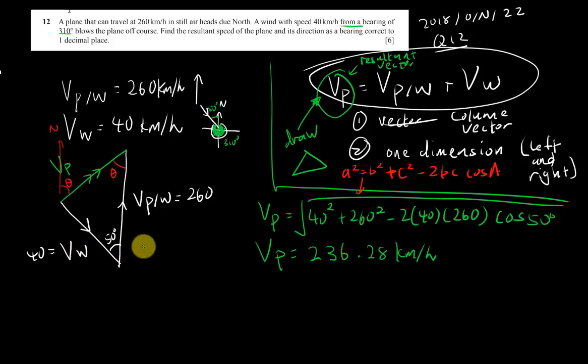In order to find this angle, I can just use the sine rule if I'm not mistaken. So I will say sine theta over opposite length, which is 40, equals sine 50 over 236.28. Then I can get my bearing easily by solving this equation.